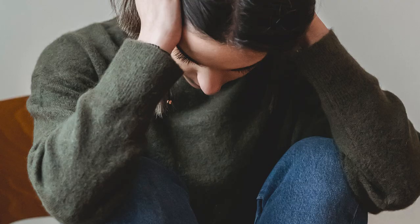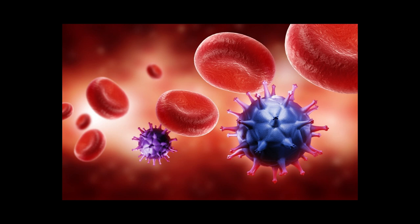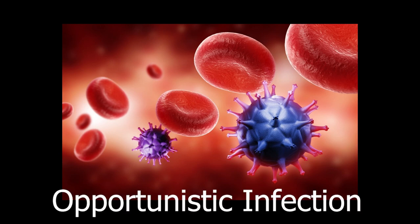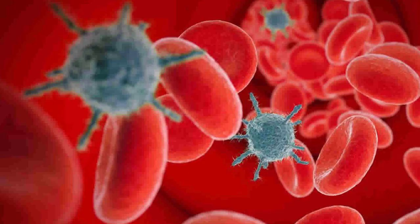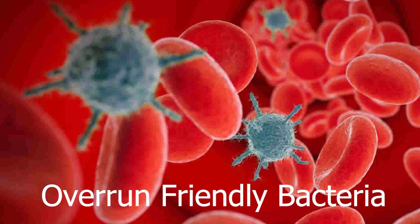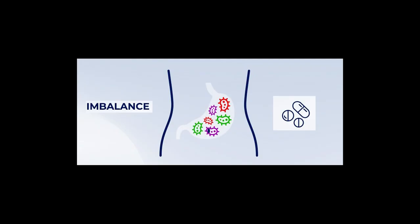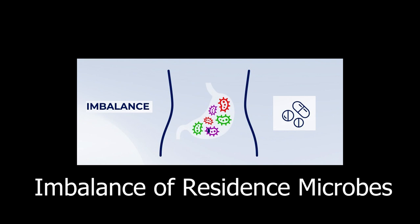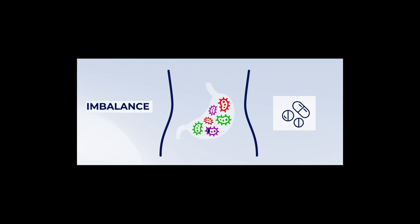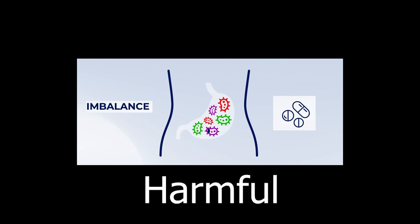Friendly bacteria help keep you healthy in many ways, so when antibiotics kill friendly bacteria, your health can suffer because you lose these benefits. Additionally, losing friendly bacteria can give other types of bacteria room to multiply, leading to opportunistic infection. Sometimes opportunistic infection happens when bacteria from the environment get into your body and overrun friendly bacteria damaged by an antibiotic. Other times opportunistic infection begins when antibiotics disturb the balance of your resident microbes, and normally friendly bacteria multiply too quickly and become harmful.